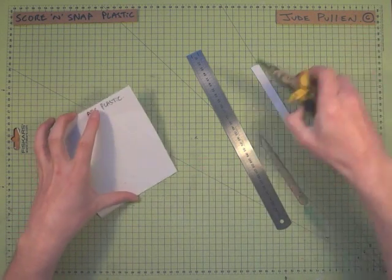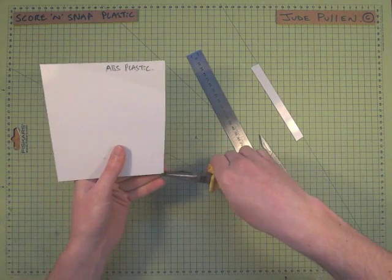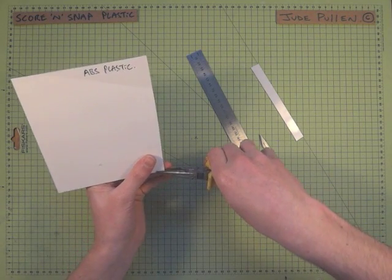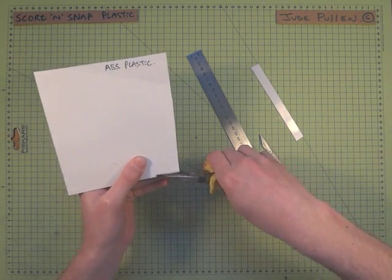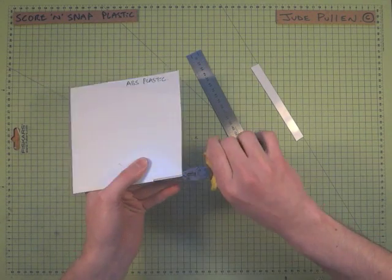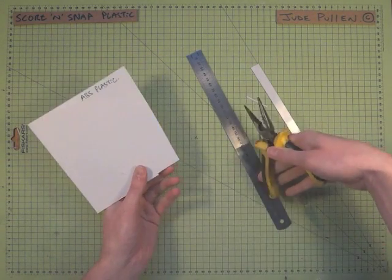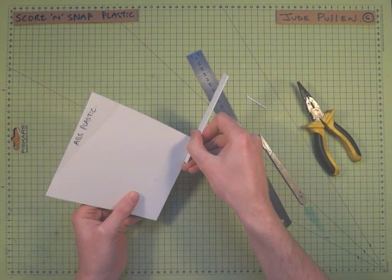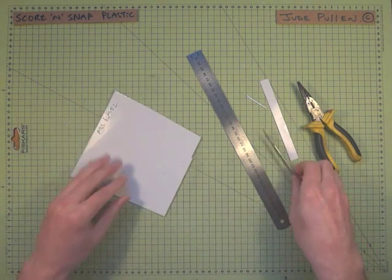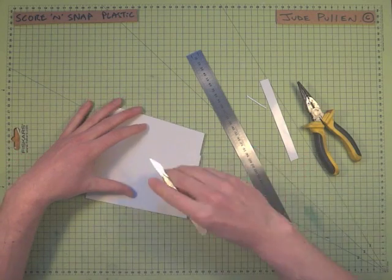So take your pliers and bend it and work your way along the piece and then you'll find it comes away like that. So that might be useful if you're trying to glue something and then set it like that.